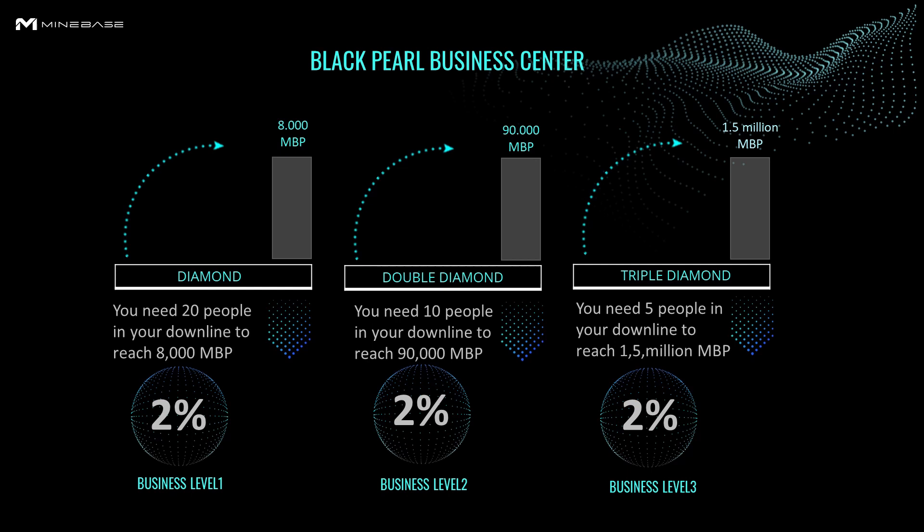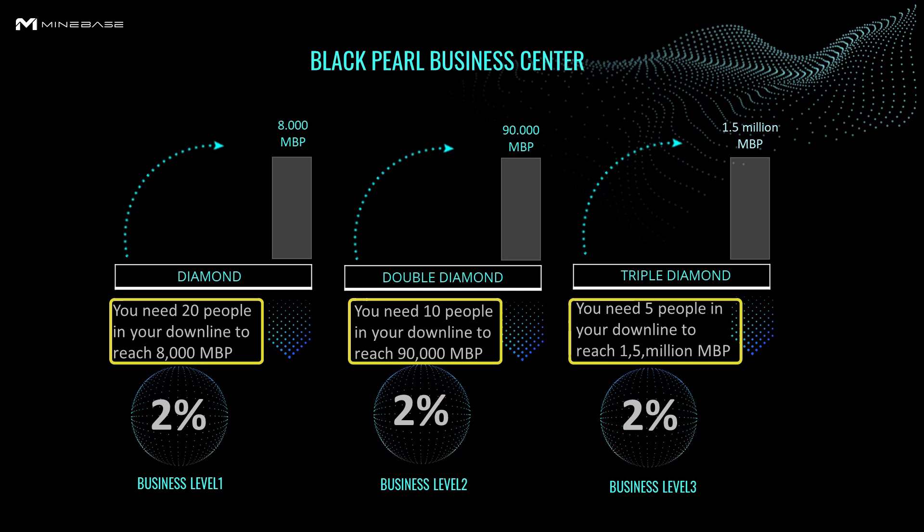You can get weekly additional payout in the Black Pearl Business Center. You need at least 20 people who have made 8,000 MBPs with their downline once in the week, and you get additional commission from this business level. This also applies to the other two levels. Once you have reached the first level, you will stay until you have reached the next level, and in each level there is 2% from the total turnover.